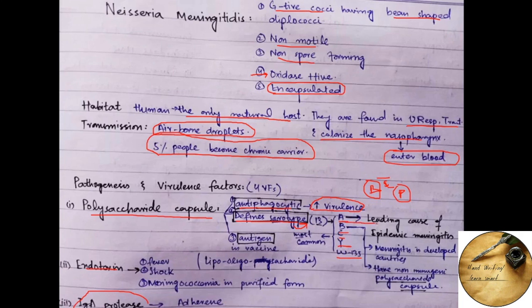A serotype is the leading cause of epidemic meningitis and the B serotype is the leading cause of meningitis in developed countries. It also has non-immunogenic polysaccharide capsule, meaning that the capsule of this bacteria does not produce antibodies against it.